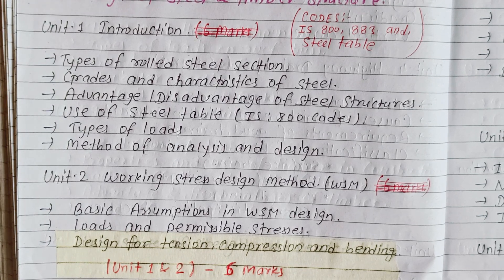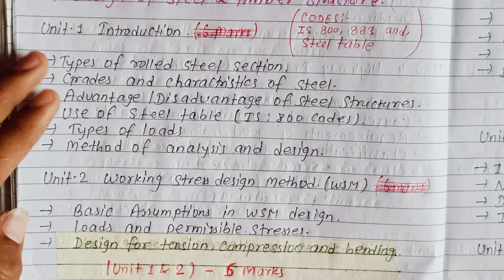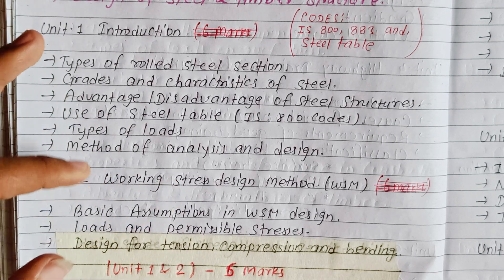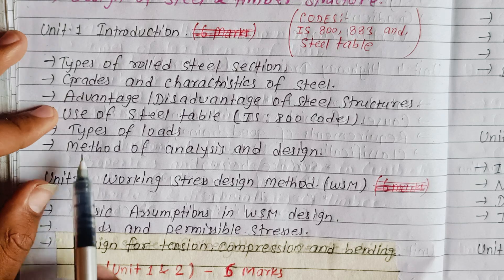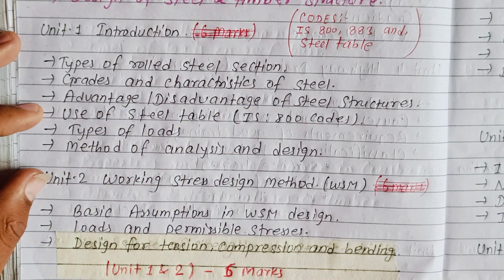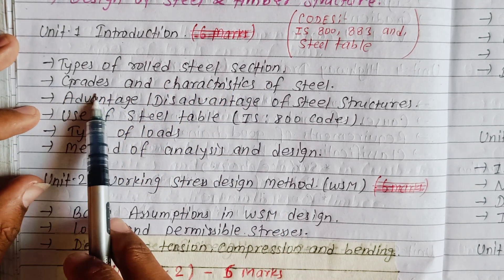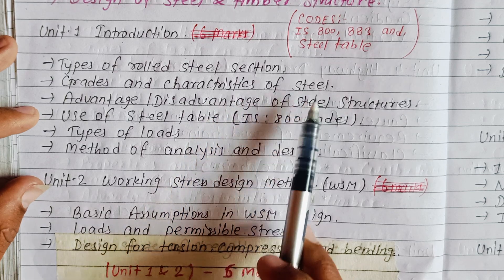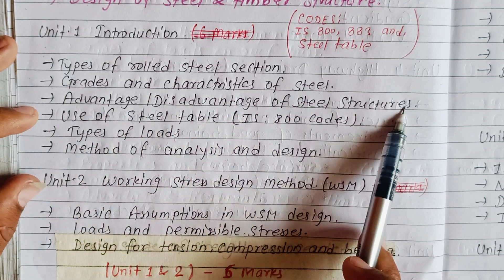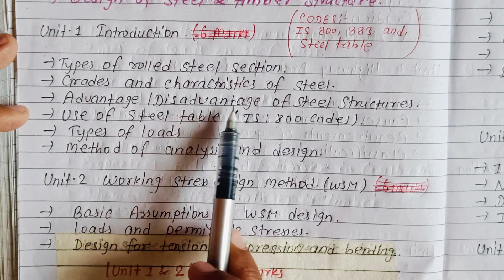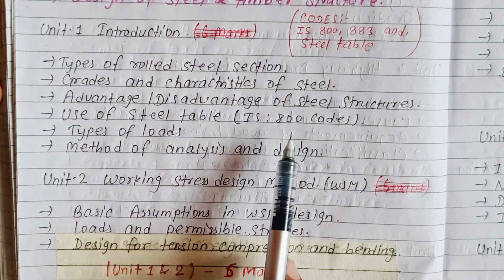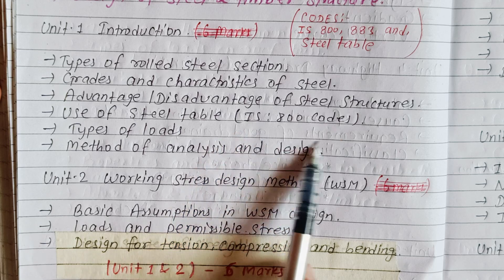Unit 1 covers: introduction — 3 marks; types of rolled steel sections and their old sections — 6 marks; grades and characteristics of steel; steel structure advantages and disadvantages; and use of the steel table with IS 800 code.